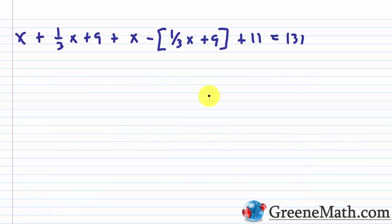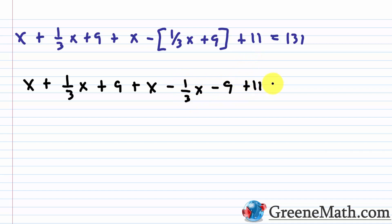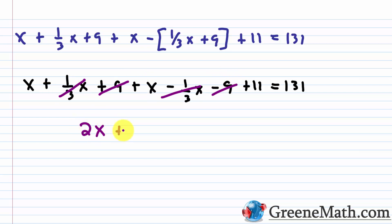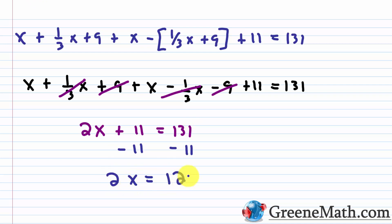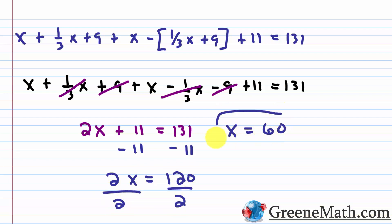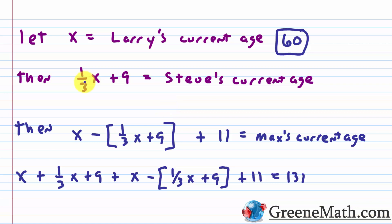Distributing and simplifying: x + 1/3 x + 9 + x − 1/3 x − 9 + 11 = 131. Notice that the 1/3 x terms cancel and the 9's cancel, leaving 2x + 11 = 131. Subtracting 11 from each side gives 2x = 120, and dividing by 2 gives x = 60. So Larry is 60. Steve is (1/3)(60) + 9 = 20 + 9 = 29. Max is 60 − 29 + 11 = 42.